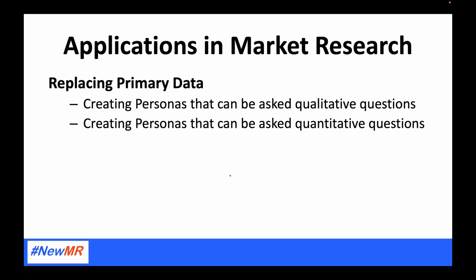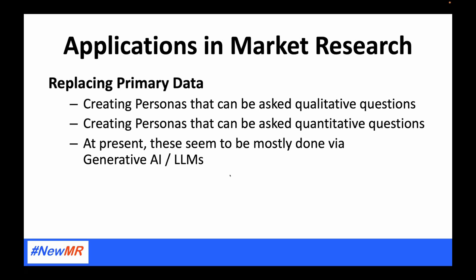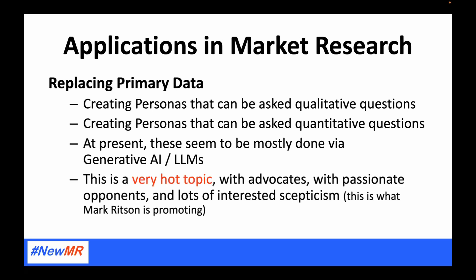Then we get the most contentious use case: replacing primary data — creating personas that we can ask qualitative questions to, or personas that can be asked quantitative questions. At present, these are mostly done via generative AI. This is what has really taken off since the highly publicized launch of ChatGPT about 20 months ago. There are advocates and passionate opponents, and lots of interested skeptics. It's this use of synthetic data to replace primary data that is what is in Mark Ritson's article. I recommend you read it, but I do not recommend that you believe it too much.